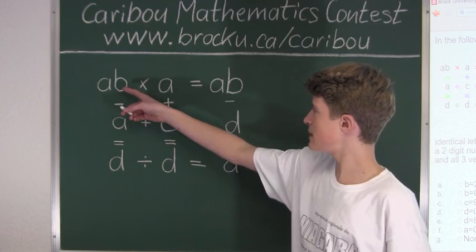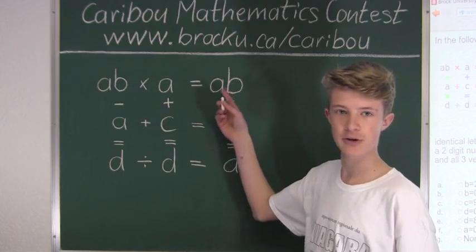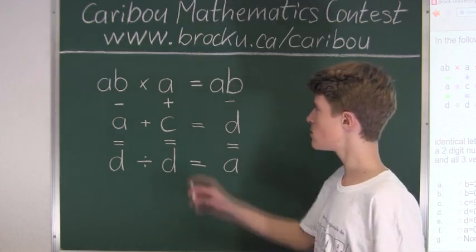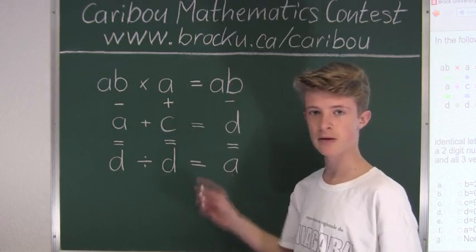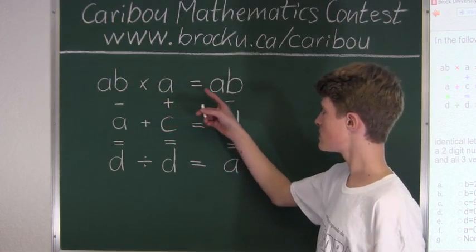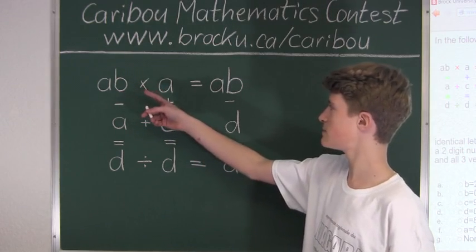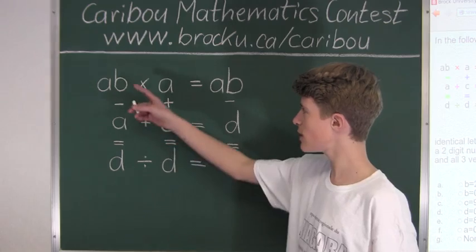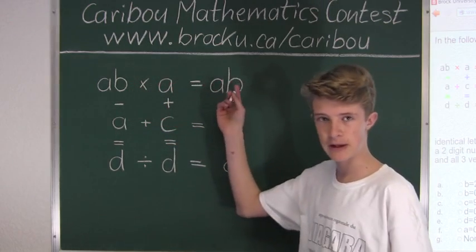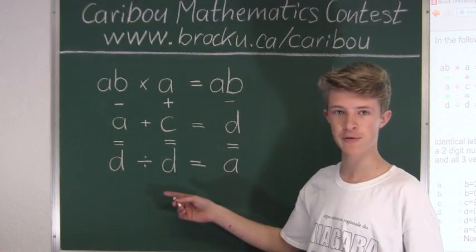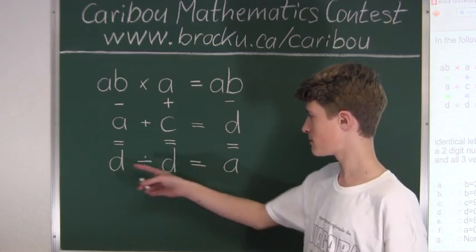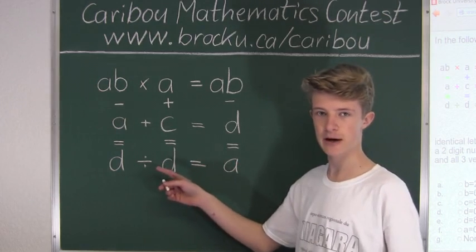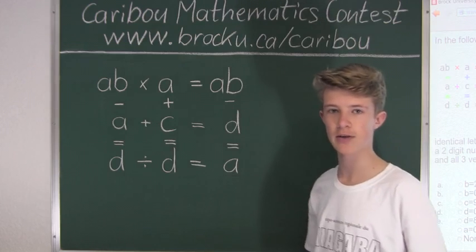We have AB here and AB again — since they're the exact same digits beside each other, they must be the same number. Looking at the top calculation, we have AB times A equals AB — a number times a different number equals itself — so we know that A must equal 1. We can confirm this by looking at the bottom calculation: D divided by D equals A, and a number divided by itself must equal 1. So A equals 1.